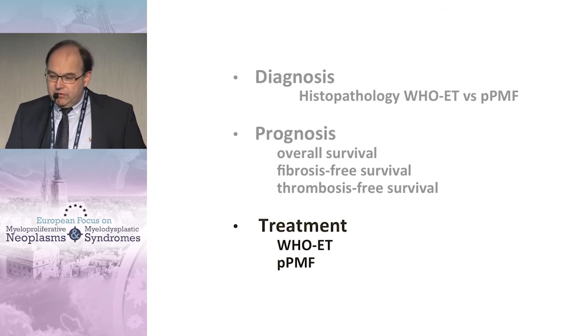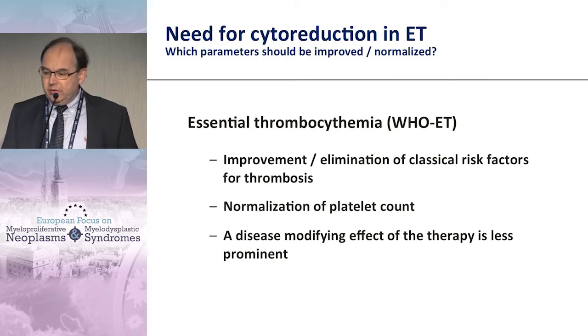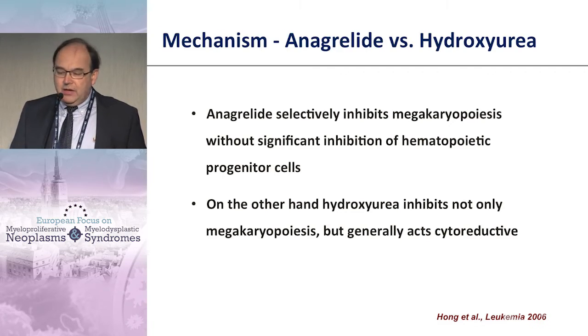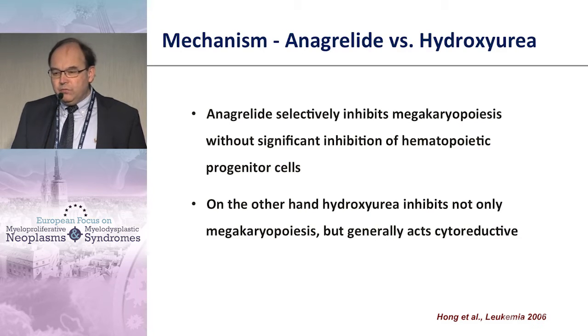What do we want to achieve in the treatment of WHO-classified ET? Certainly improvement in thrombosis risk — normalizing general cardiovascular risk factors and platelet count. Since ET is a neoplastic disorder, we would also like to achieve a disease-modifying effect where possible. Some cytoreductive compounds may reduce the JAK2 allelic burden, but such compounds are not yet registered for this entity.